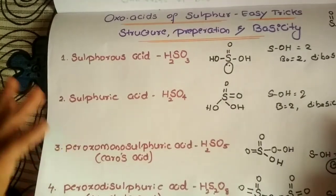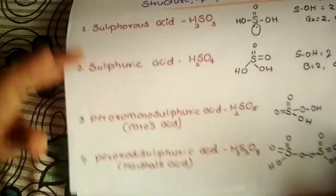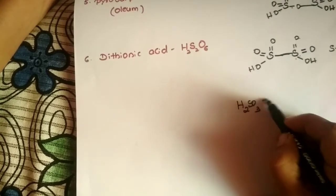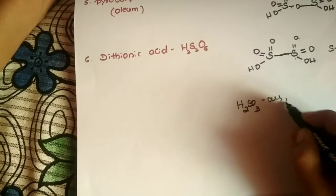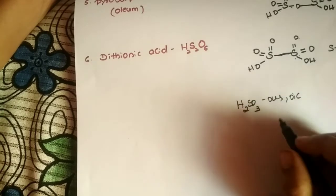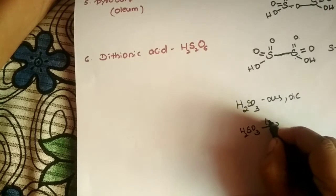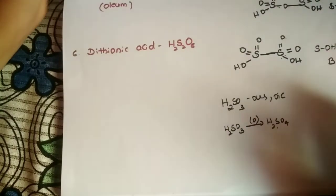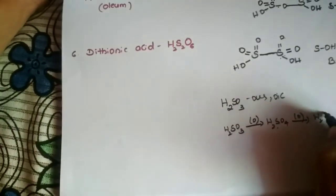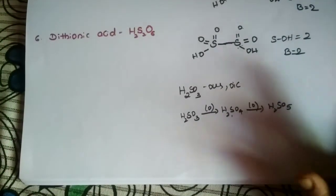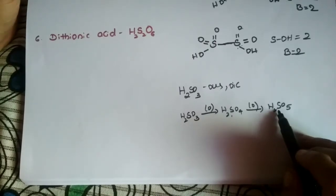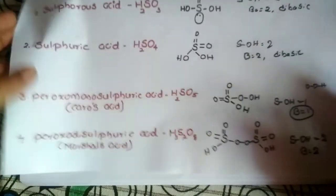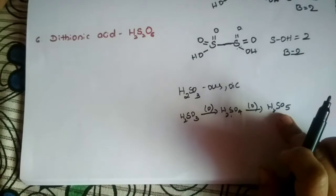A simple way to remember: for the lower oxidation state, the suffix '-ous' is used (e.g., sulfurous acid H₂SO₃); for the higher oxidation state, the suffix '-ic' is used (e.g., sulfuric acid H₂SO₄). By adding one oxygen to H₂SO₃ we get H₂SO₄, and adding one more oxygen gives H₂SO₅ — Caro's acid or peroxo monosulfuric acid.